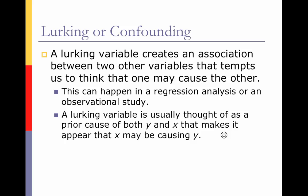So is a variable lurking or is it confounding? A lurking variable creates an association between two other variables that tempts us to think that one may cause the other. This can happen in regression analysis or in an observational study. A lurking variable is usually thought of as a prior cause of both Y and X that makes it appear that X may be causing Y — it's like an underlying reason. Confounding, on the other hand, is when the experiment is not designed properly or when one factor directly affects another factor.